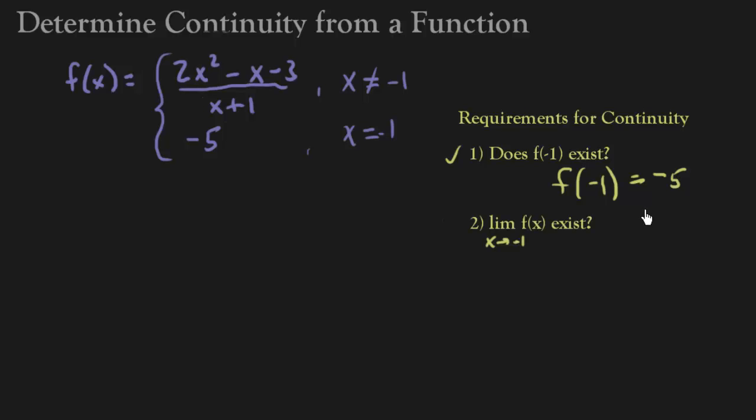The second requirement is does the limit of f of x exist as x approaches negative 1. Okay so now this is when x equals negative 1, so when we're dealing with the limit as x approaches negative 1 we really don't care about this. This is what my function is acting like when x is not negative 1. So when I say the limit of f of x as x approaches negative 1, it's the same thing as saying the limit as x approaches negative 1 of this function.